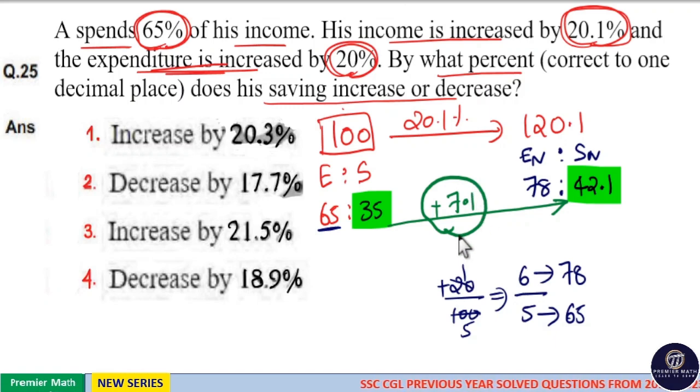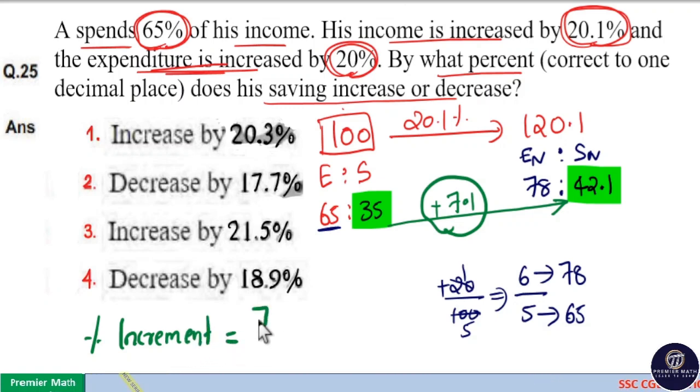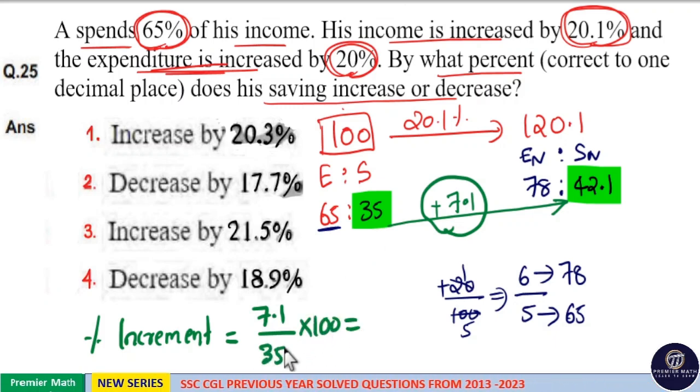And, this 7.1 rupees increment is from this 35 rupees. So, percentage increment is equal to 7.1 increment generated from this 35 rupees. So, 7.1 by 35 into 100. Consider this as 7. 7 goes 5 times in 35. 5 goes 20 times in 100.